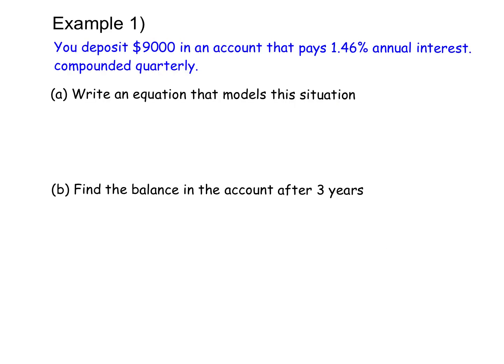Let's take a look at this first example here. It says you deposit $9,000 in an account that pays 1.46% annual interest compounded quarterly. So because it says compounded quarterly, I know I'm going to use this new situation because the compounding needs to use the compounding equation. Remember the equation we're going to use is Y equals A times (1 plus R over N) to the power of N times T. So we need to find A, R, N, and T.